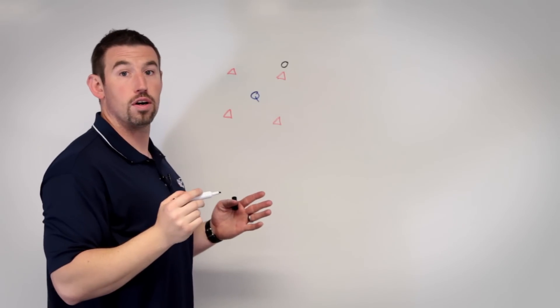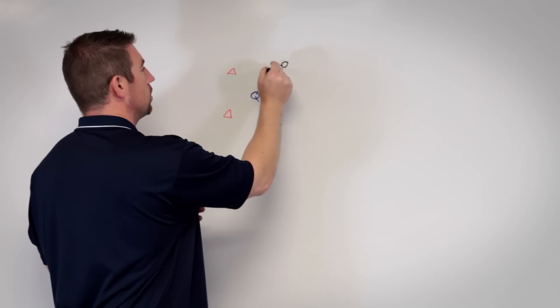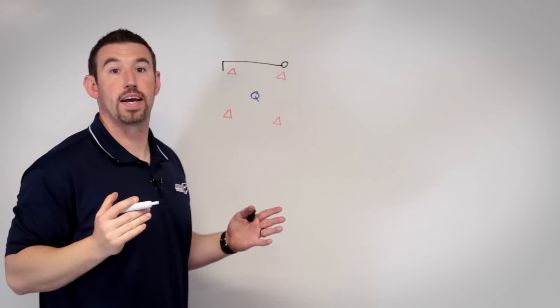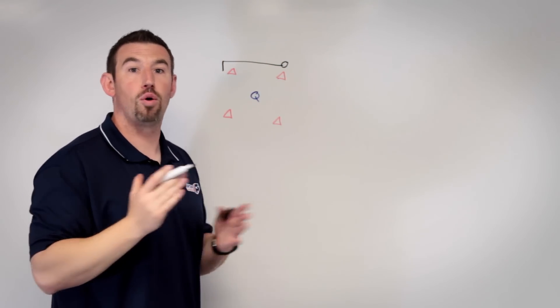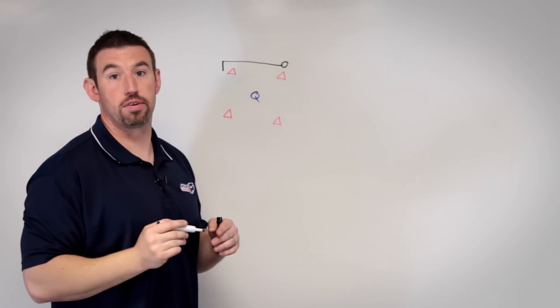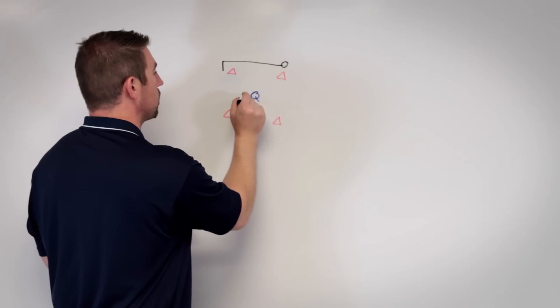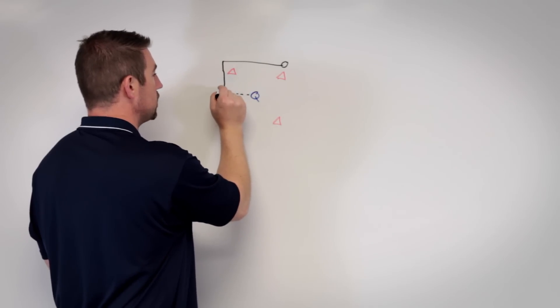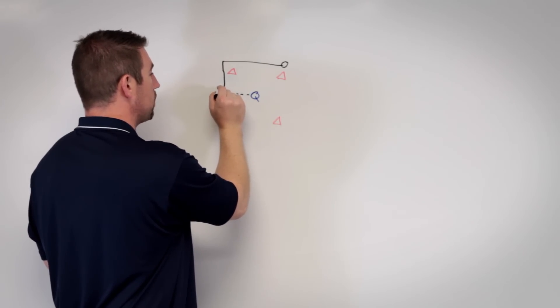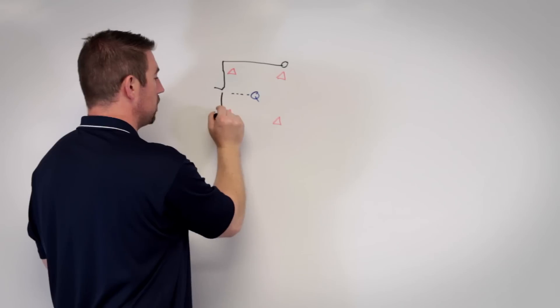On the snap of the ball, our wide receiver is going to run to the first cone and execute a break as if he would on an in or an out route. A great 90 degree cut. After he makes the break, the quarterback is going to throw him the ball. He's going to catch the ball, immediately drop the ball, and continue on the path.